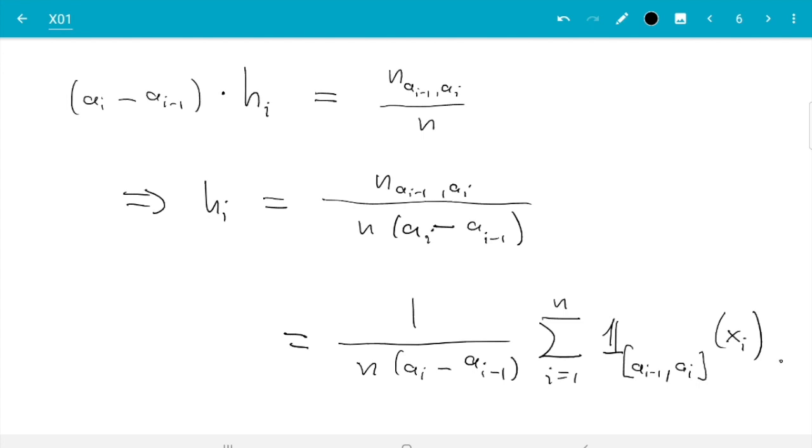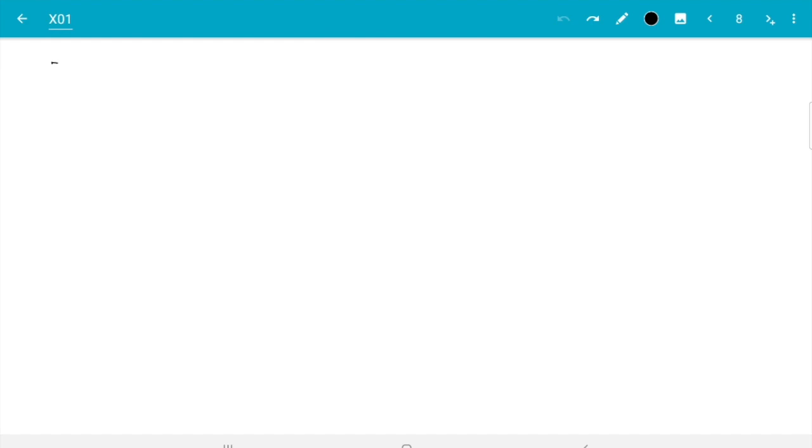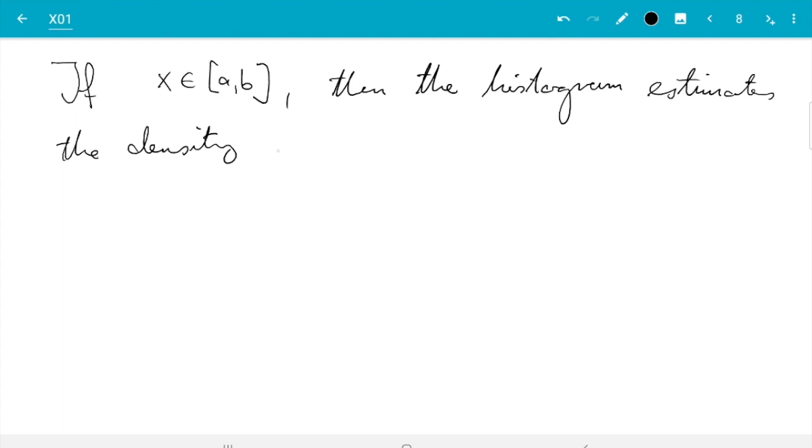What we've just seen is when we scale the histogram bars so that we hope they estimate the density function, then the height of bucket i, h_i, should be given by that. So if x is in some interval [a, b], then the histogram estimates the density at x as f̂(x) = 1/(n(b-a)) times the sum from i=1 to n of the indicator function of [a,b] of x_i.